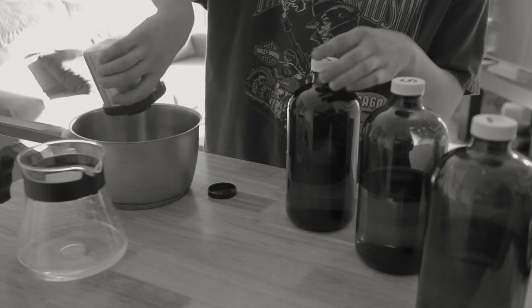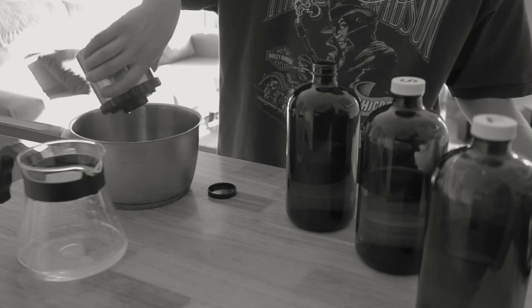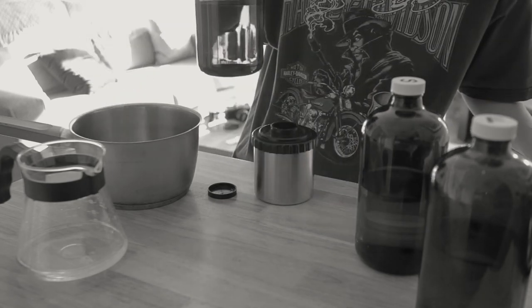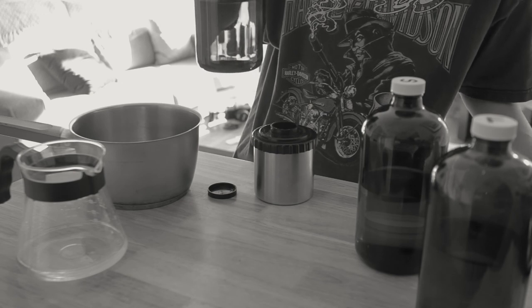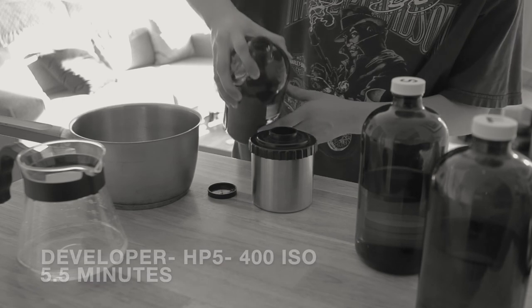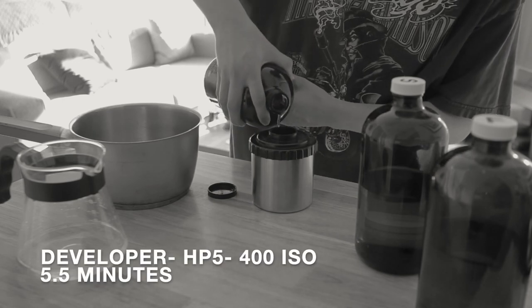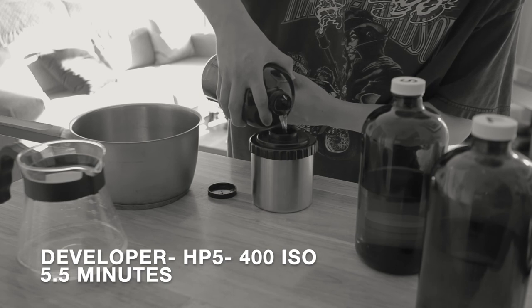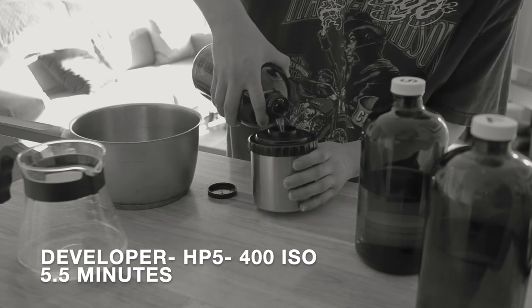So next is the developer. I'm going to start my next timer and using the massive development chart in part one we know our times for developing. So for HP5 400 ISO it's 5.5 minutes.